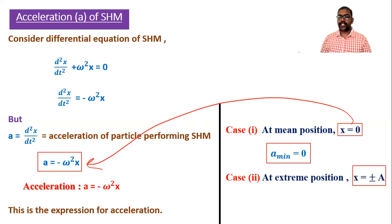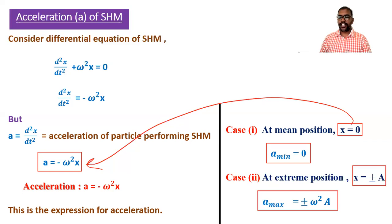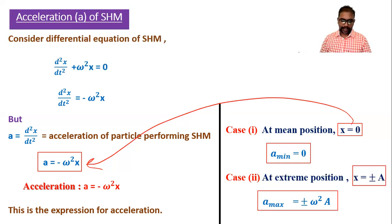Case number two: at extreme position. Here we substitute x = ±a in the acceleration formula, and we get acceleration = ±ω²a. This is the acceleration at extreme position, and it is the maximum acceleration. Maximum acceleration occurs when displacement is maximum. This finishes the acceleration part.